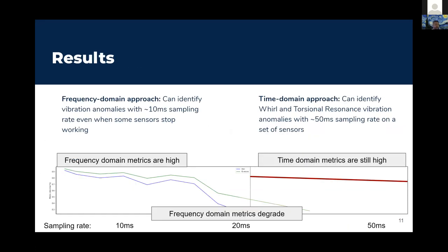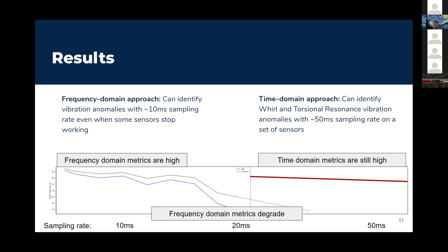In terms of results, with the frequency domain approach, sufficiently high metrics of around 0.8 to 0.9 were only achievable at the 10ms range, dropping significantly below that. With the time domain approach, metrics remain high within the 20 to 50ms range with no sharp drop-off. Using five times less sampling while still identifying drill bit problems translates to significant battery life savings, meaning the drill bit can stay longer in the field without battery replacement.